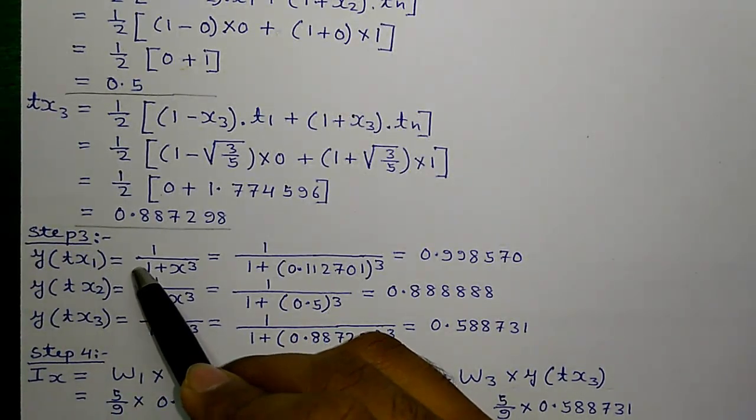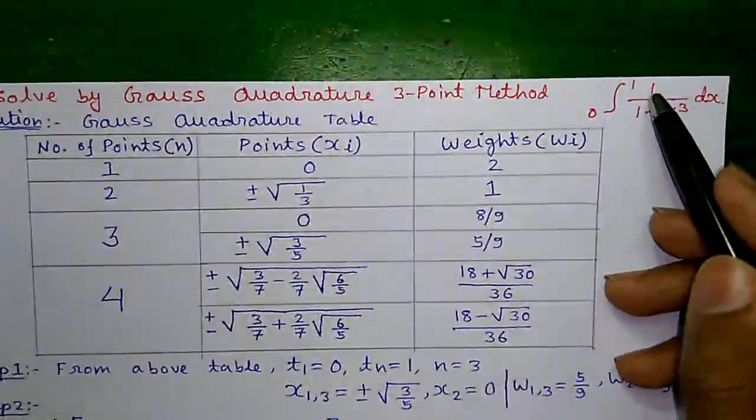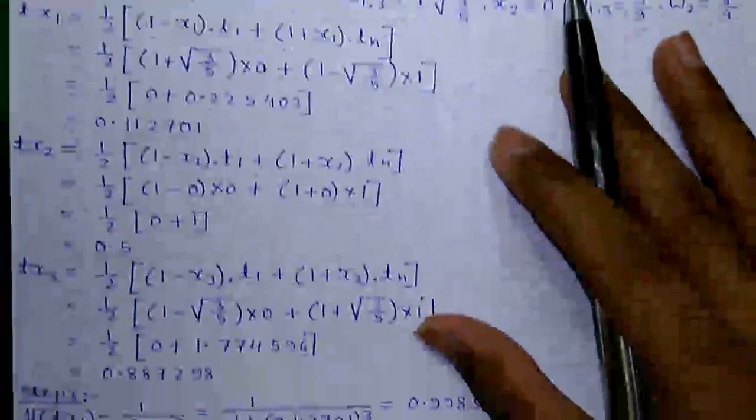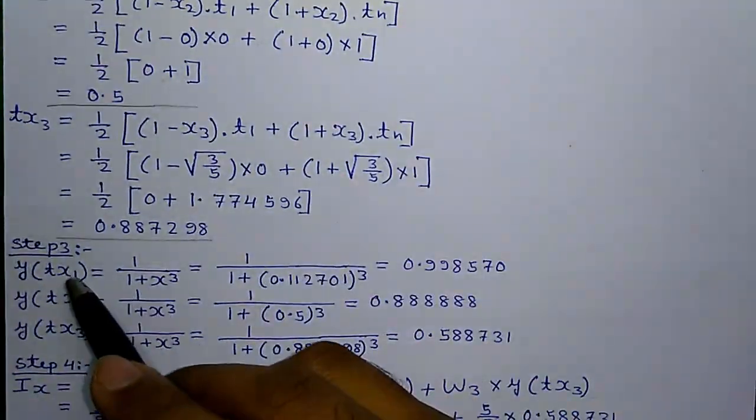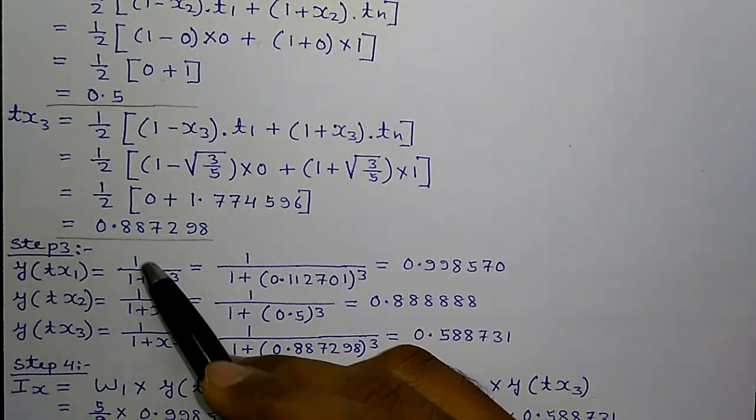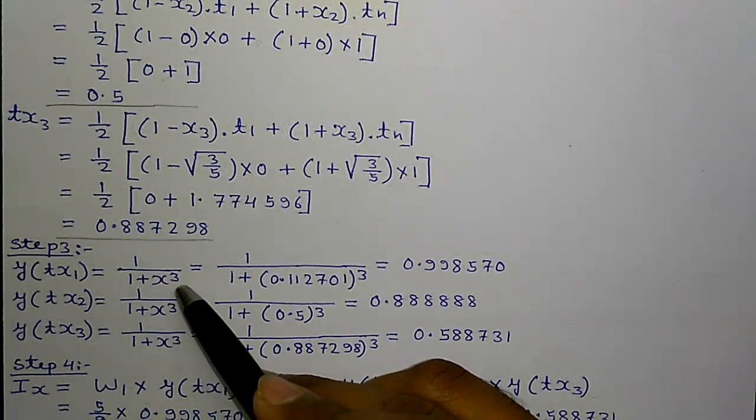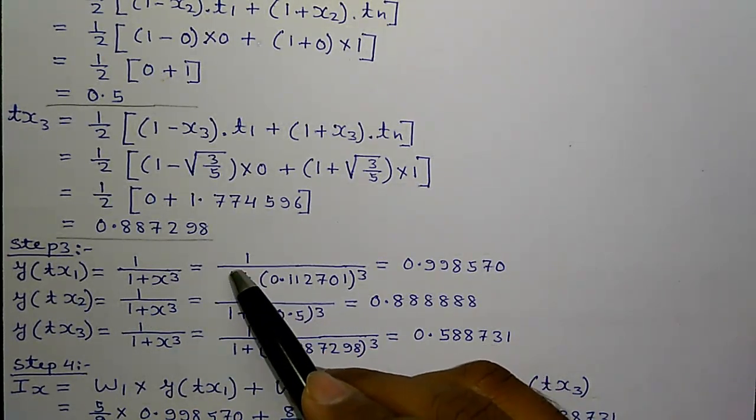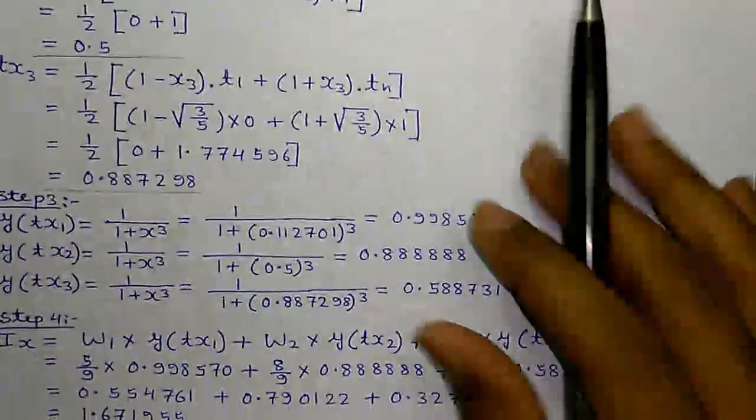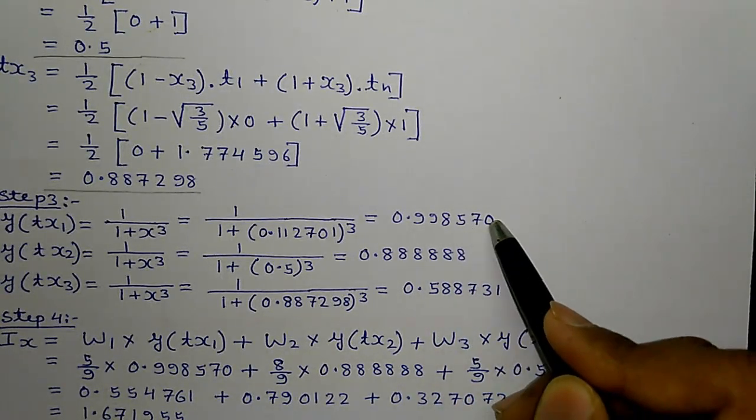Now, this is the expression, we need to find out the integration of that is 1 divided by 1 plus x cubed. And now, we will put the values of tx1, tx2 and tx3 in place of x here. So, y of tx1 equals to 1 divided by 1 plus x cubed equals to 1 divided by 1 plus tx1 value cube. That's equals to 0.998570.